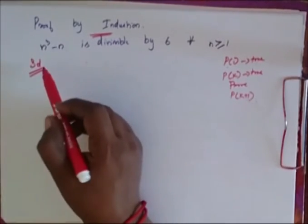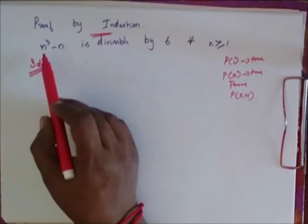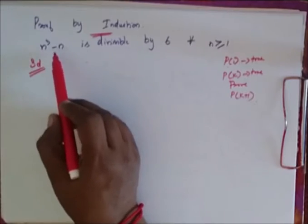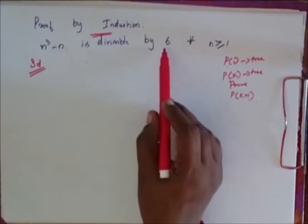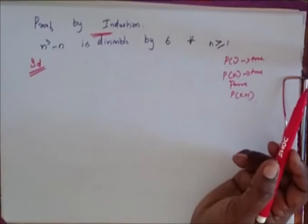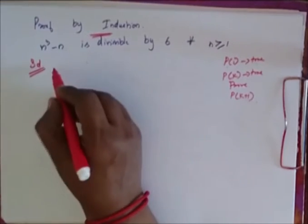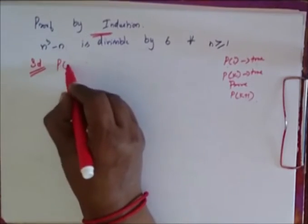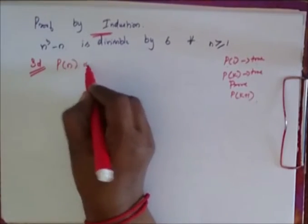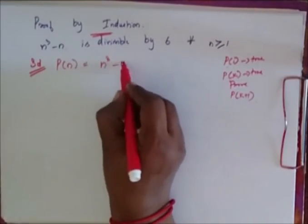Now I go for the solution where my problem is: n cubed minus n is divisible by 6 for every n greater than or equal to 1. So now I consider my P of N as n cubed minus n.